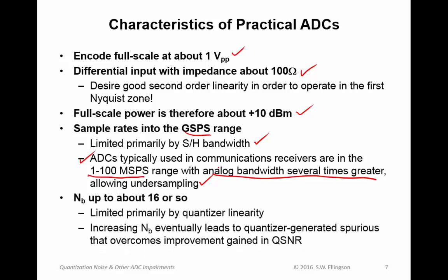Modern ADCs have numbers of bits up to about 16 or so. This is limited primarily by quantizer linearity. An increasing number of bits eventually leads to quantizer-generated spurious that overcomes the improvement that you would gain in quantization signal-to-noise ratio. So there's a trade-off here. You can improve the quantization signal-to-noise ratio by increasing the number of bits. But at the same time, the non-linearities associated with the increased numbers of quantization intervals results in spurious which can offset the benefit that you gain.